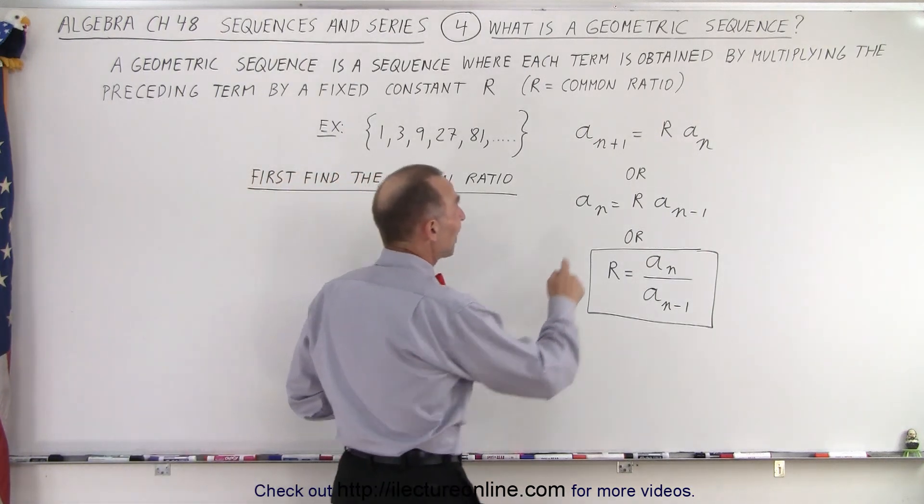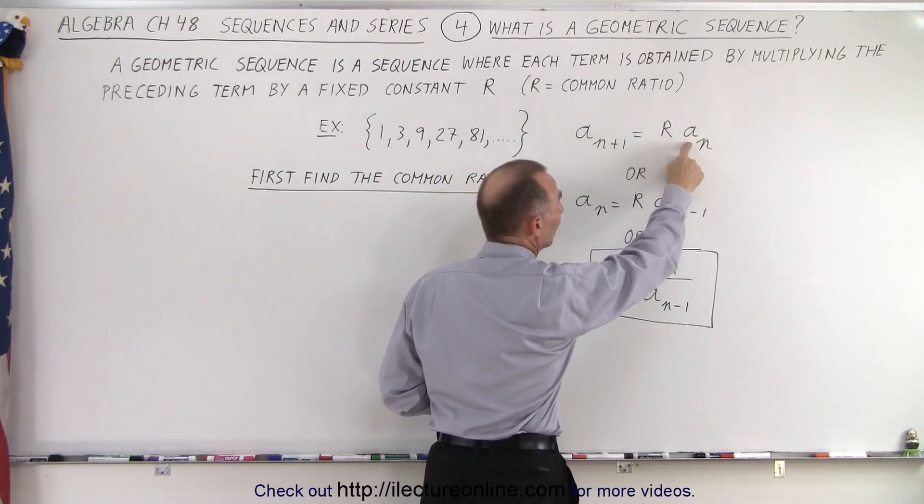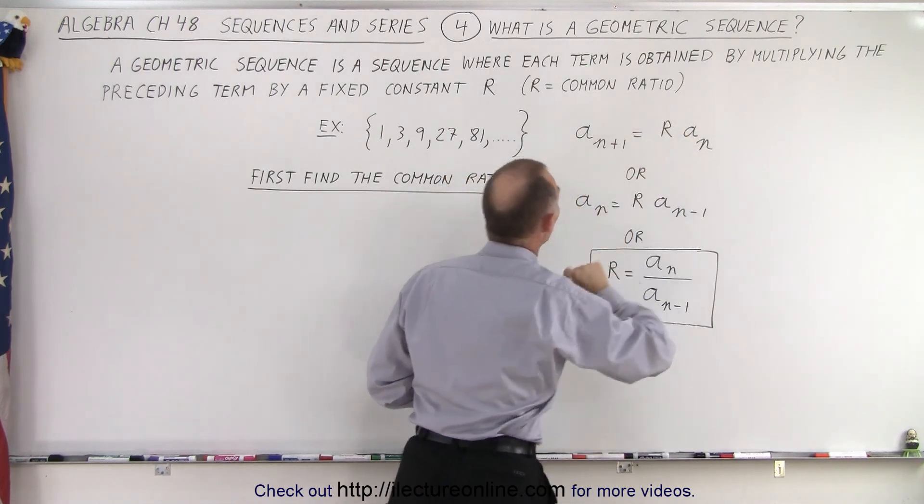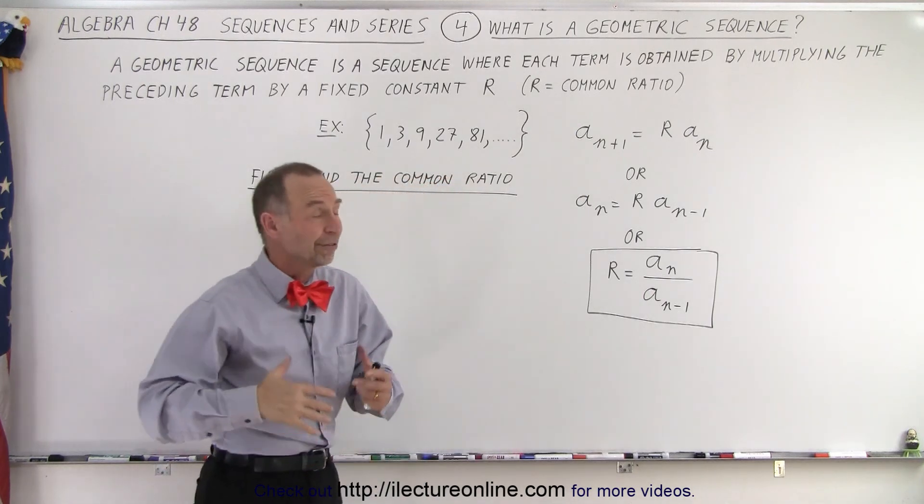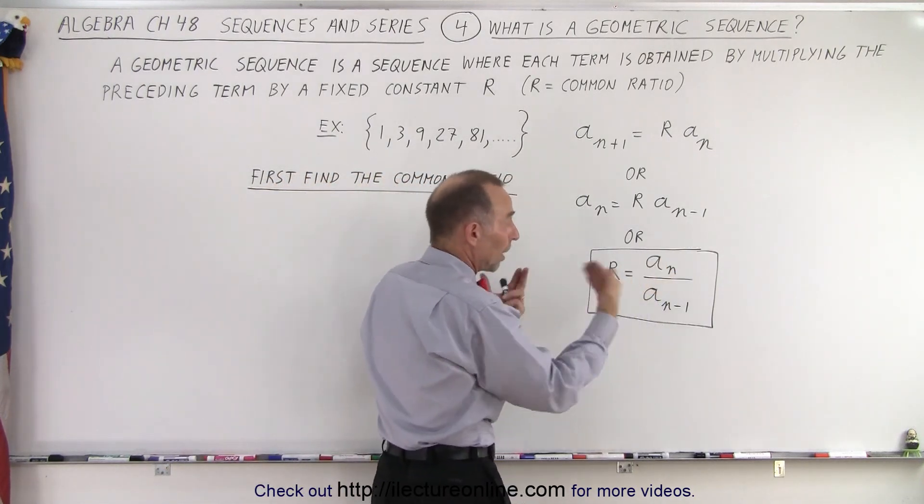So in essence, what we do is to find the next term in the sequence, we take the previous term and multiply it by R. Now R is called the common ratio. We can find the common ratio by taking the ratio, and that's why it's called the common ratio.